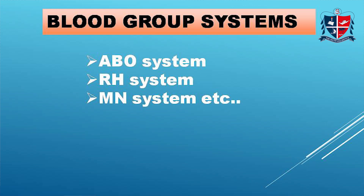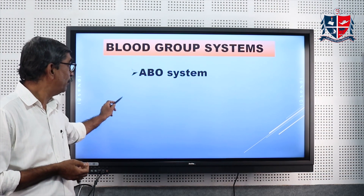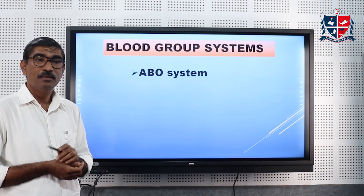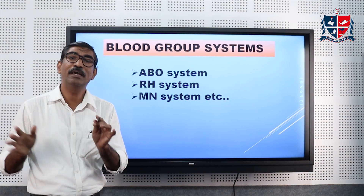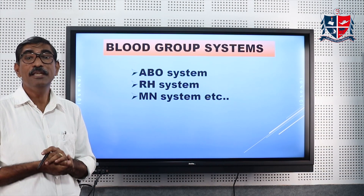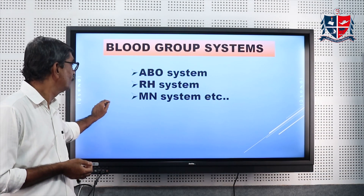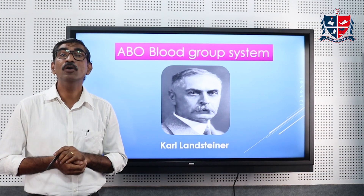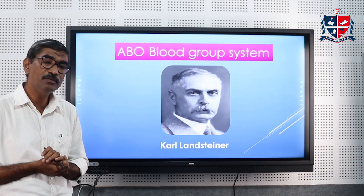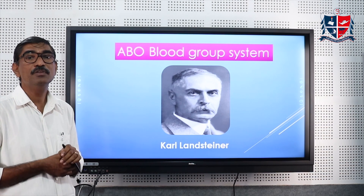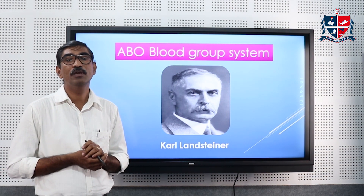There are different types of blood grouping systems in human beings — more than 30 different types. The ABO blood group system is the most widely used and most popular among all these blood group systems, and this system was discovered by Karl Landsteiner, who received the Nobel Prize for this discovery.